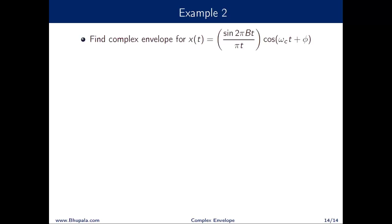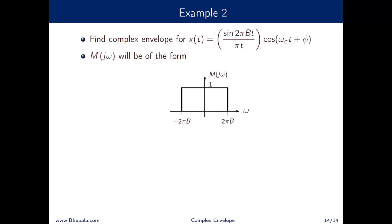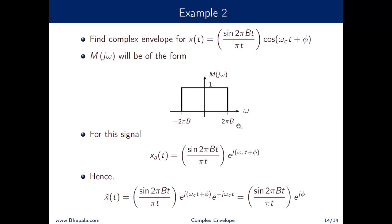As a second example, take x(t) = [sin(2πBt)/πt]·cos(ωct + φ). The Fourier transform of sin(2πBt)/πt is a rectangle from −2πB to +2πB. The analytic signal is [sin(2πBt)/πt]·e^(jωct), so the complex envelope simplifies to x̃(t) = [sin(2πBt)/πt]·e^(jφ). This confirms that the complex envelope of a band-pass signal is a low-pass signal multiplied by a complex constant e^(jφ). In the next lecture, we will discuss the in-phase and quadrature components of a signal.